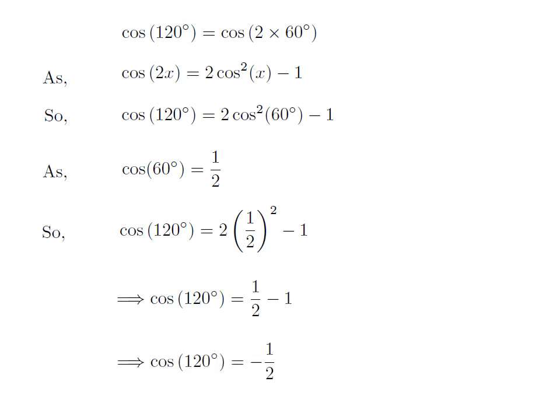As half minus 1 is equal to minus half, the value of cosine of 120 degrees is equal to minus half.